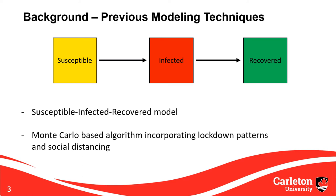Looking at previous work in the field, modeling infection is widely studied using the susceptible-infected-recovered (SIR) model, describing the number of people in each of the three states at a point in time. A susceptible person can move to the infected state, and an infected person can move to the recovered state, where they cannot be reinfected in the simplest implementation. Another method used to simulate COVID-19 spread is a Monte Carlo-based algorithm, which can incorporate the effects of lockdown patterns and social distancing regulations.